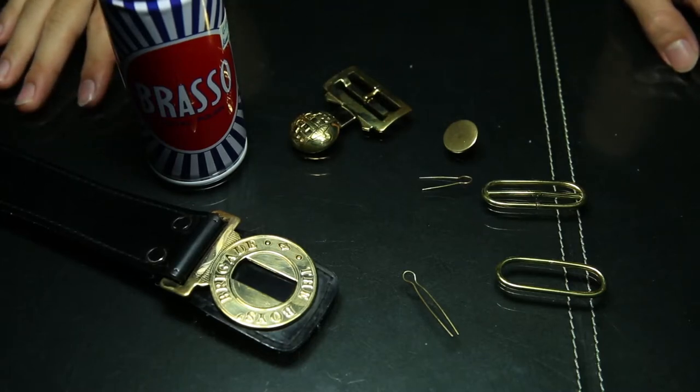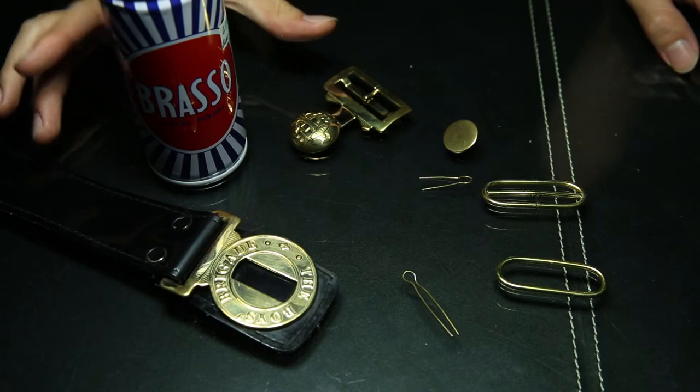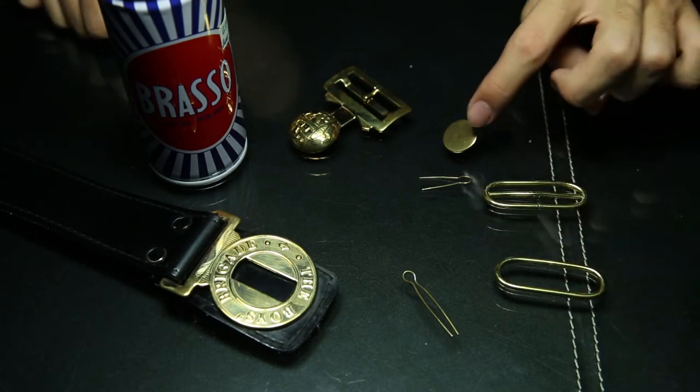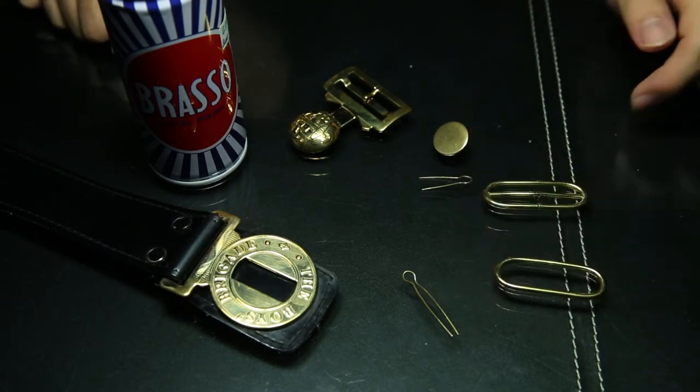There are 7 metal parts in the BB uniform that you need to polish. 2 are from the belt, 4 are from the haversack and 1 is from the cap.